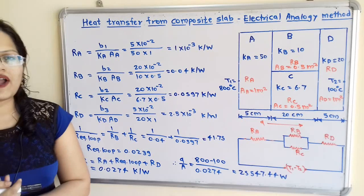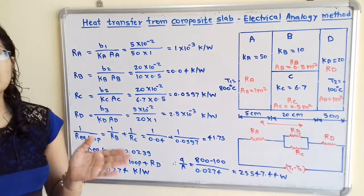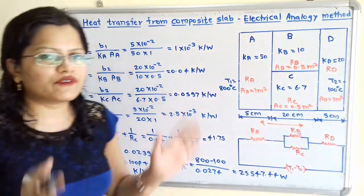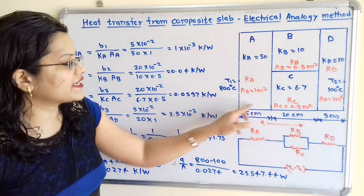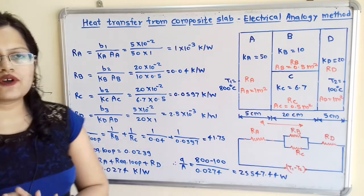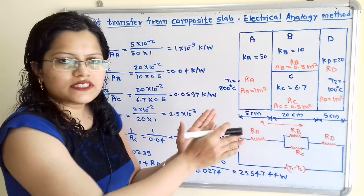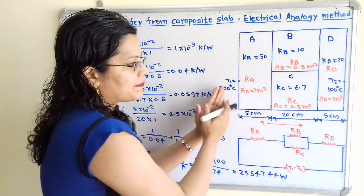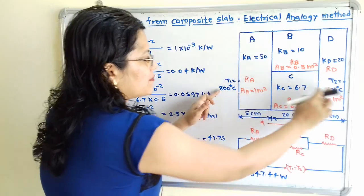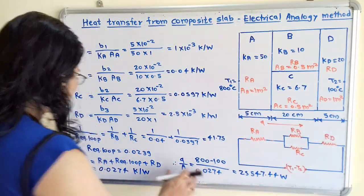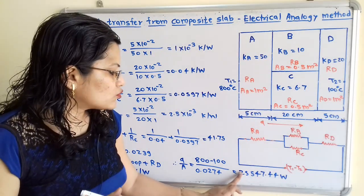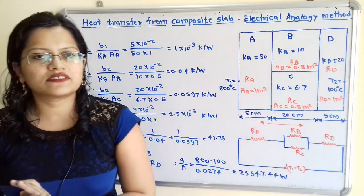We now find the amount of heat transfer. Since one-dimensional heat transfer is assumed with area taken as 1 meter square, we calculate Q/A. The formula gives Q/A equal to temperature difference T1 minus T2 divided by the summation of R, which is 800 minus 100 divided by 0.0274, equal to 25547.44 Watt. This is the final answer.